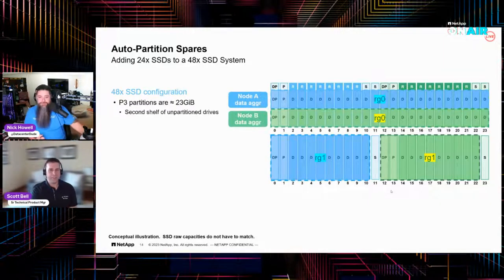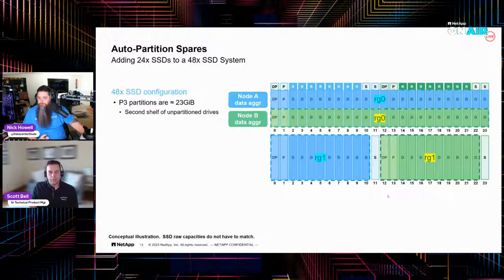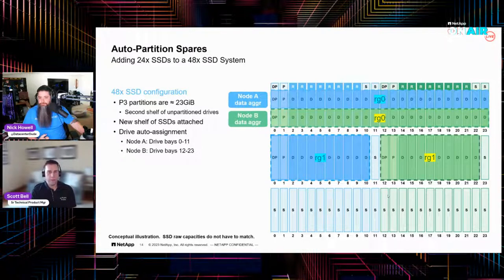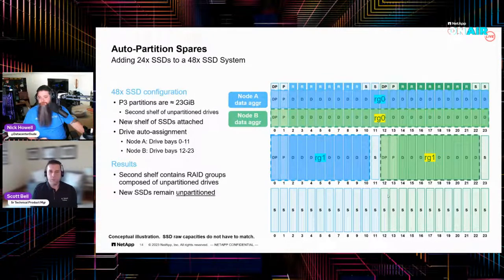Here's the fun caveat. Say I've got a 24-drive system. I expanded it last year with a full shelf, but my second RAID group or aggregates are composed of whole drives. What happens? I've got 24 P3 partitions, 23 gigs each. I've got a second shelf of unpartitioned drives. Now I attach a new shelf — drive auto assignment does the heavy lifting, but because in this case I have second RAID groups composed entirely of whole drives, the policy is ignored. It will leave that shelf completely unpartitioned.